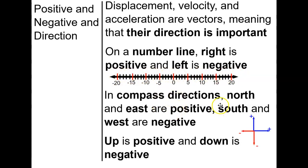In terms of compass directions, north and east are positive, which actually makes sense because up is also considered positive. So up, north, right, and east go together. South is negative; west is also negative.